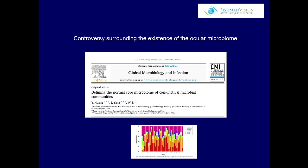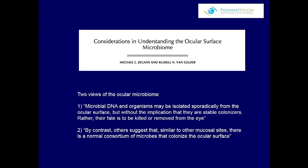There are two theories. Russell Van Gelder, an amazing scientist — an immunologist who did his MD-PhD at Stanford — is one of the leaders in this area. He wrote a paper on the ocular microbiome describing two views: that organisms can be isolated sporadically from the ocular surface, coming and going as transients fated to be killed or removed; or that there is a core consortium of microbes that stably colonize the ocular surface.